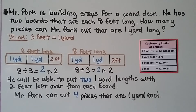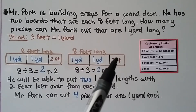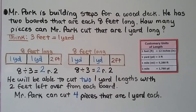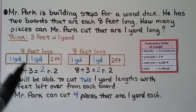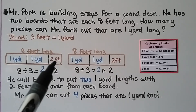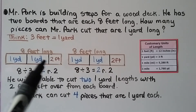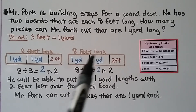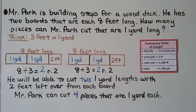Mr. Park is building steps for a wood deck. He has two boards that are each 8 feet long. How many pieces can he cut that are 1 yard long? We draw each 8-foot board separately. We do 8 divided by 3: that's 2 with a remainder of 2 feet, which is not a full yard. So from each board he gets 2 one-yard pieces. With two boards, Mr. Park can cut 4 pieces that are 1 yard each.